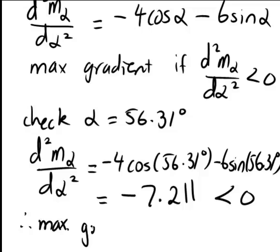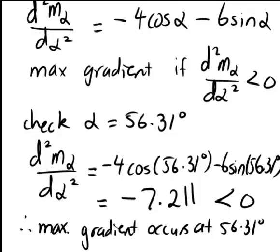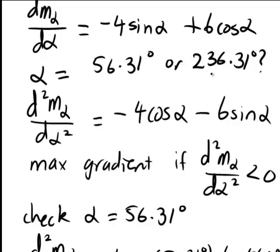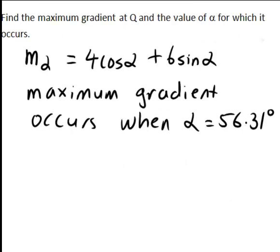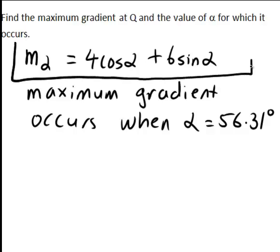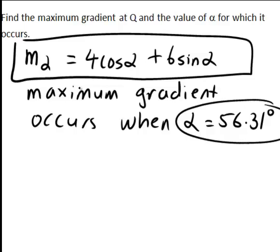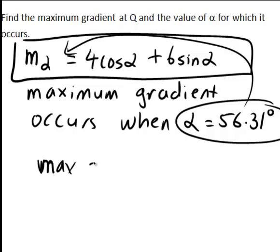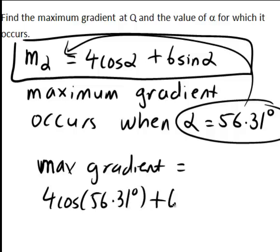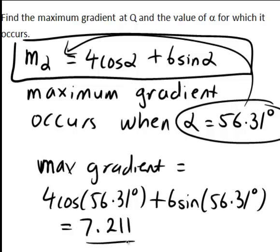Because the second derivative is less than 0, we can conclude the maximum gradient occurs at alpha equals 56.31 degrees. As an exercise, you might want to verify that substituting 236.31 degrees gives a positive value for the second derivative, meaning that is the value of alpha at which the minimum gradient occurs. To find the actual value of the maximum gradient we substitute 56.31 back into M_alpha: 4·cos(56.31°) plus 6·sin(56.31°), which gives a value of 7.211.